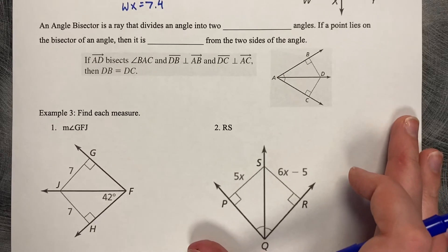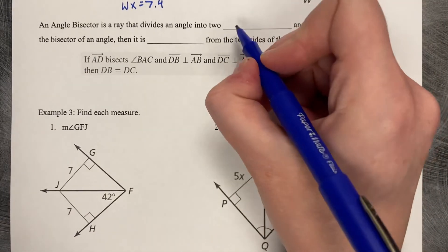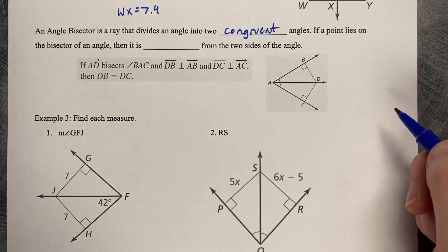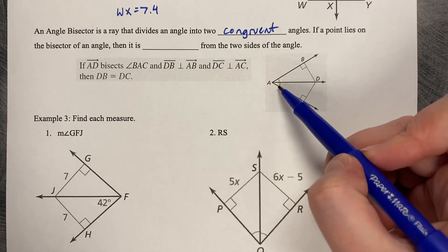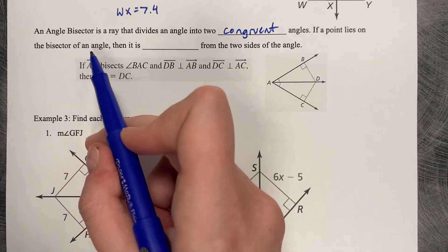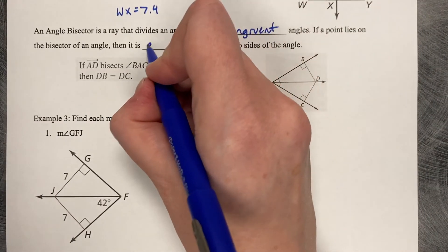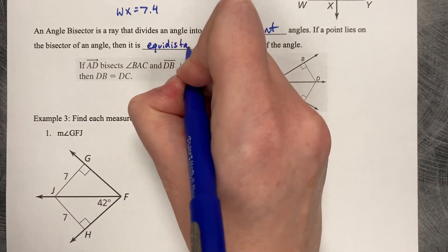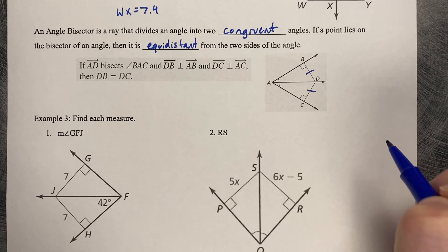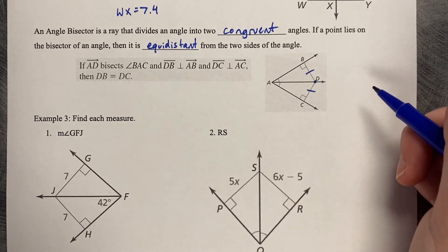The second half of the notes today is talking about angle bisectors. An angle bisector is a ray that divides an angle into two congruent angles. Remember, the synonym for congruent is equal. So it's dividing it into two equal angles. If a point, like in this picture right here where AD is cutting this angle in half, if a point lies on the bisector of an angle, so like point D, then it is equidistant from the two sides. So that means that BD is congruent to DC. So if point D lies on the perpendicular bisector, then those two perpendicular lines create equal lengths.